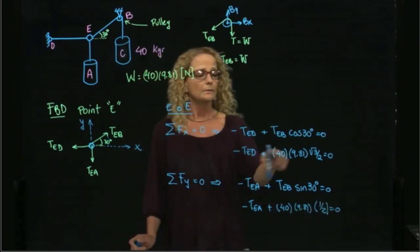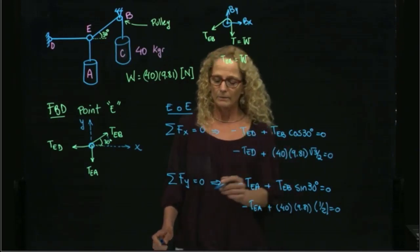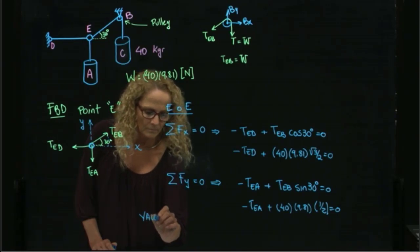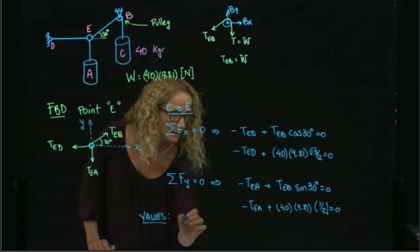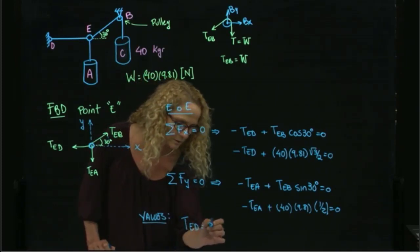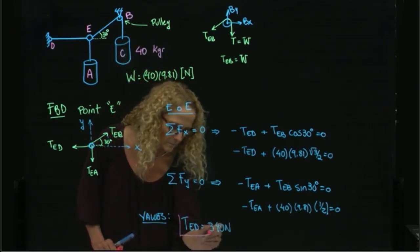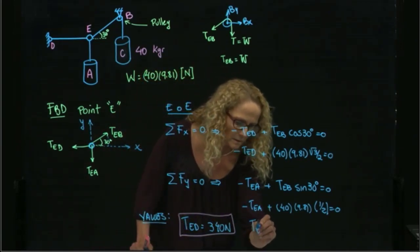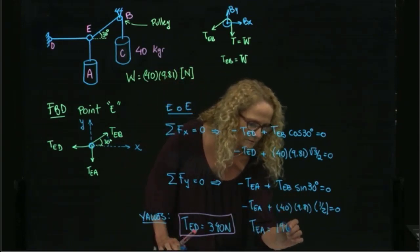So very easy, from here we solve for T Eb, and from here we solve for T Eb. And the results are that T Eb is equal to three hundred and forty newtons, and the T Eb is equal to three hundred and forty newtons.